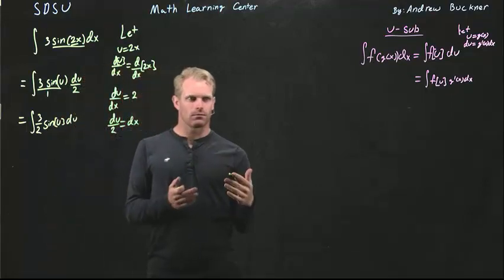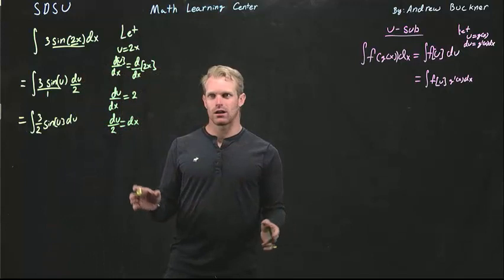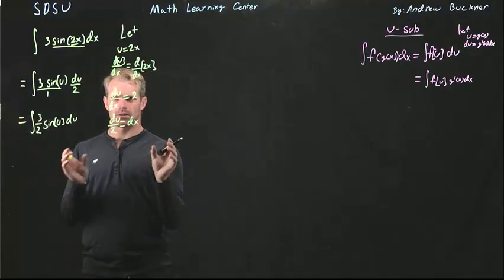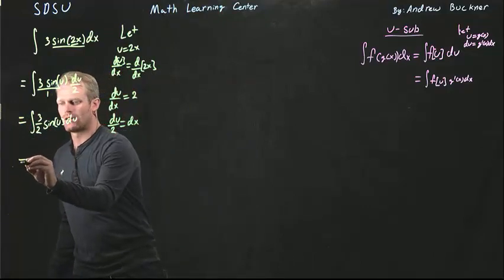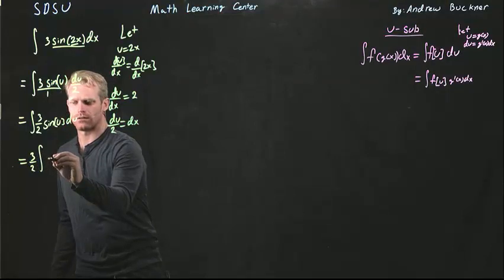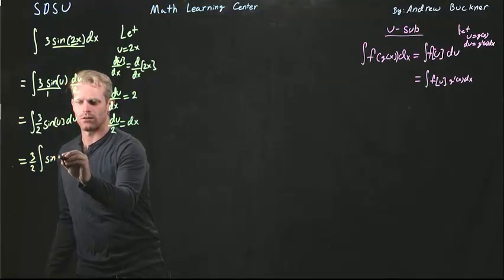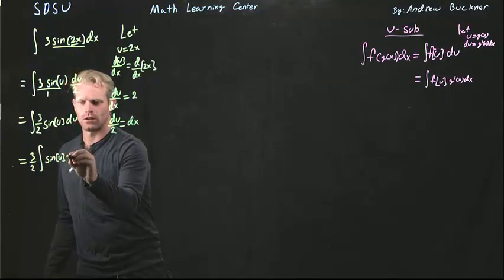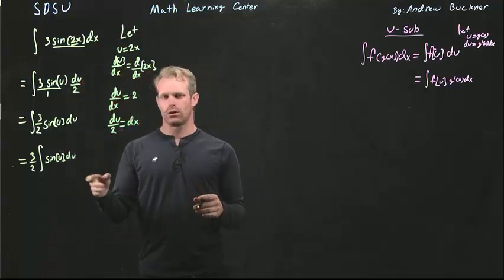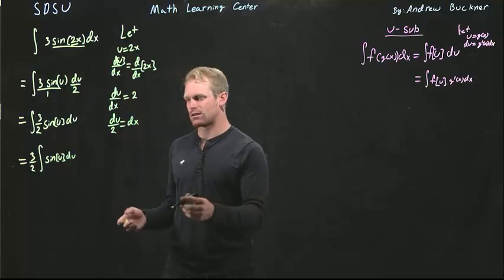From our methods of integration, we can actually pull the constant out in front of the integral. So now my 3 halves integration of sine of u du is in a more familiar form where I can then take the integration.